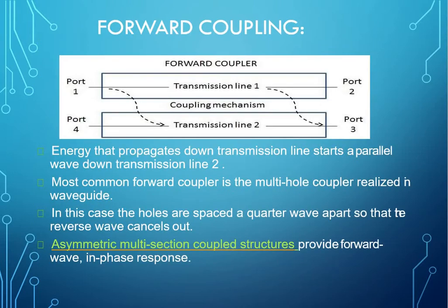Coming to forward coupling, forward coupling is when you give input in port 1. A portion of power traveling from port 1 to port 2 is always coupled in port 4 but not to port 3. In port 4, both the divided waves have the same phase such that it gets added up. But in port 3, they are out of phase with each other where it gets cancelled.